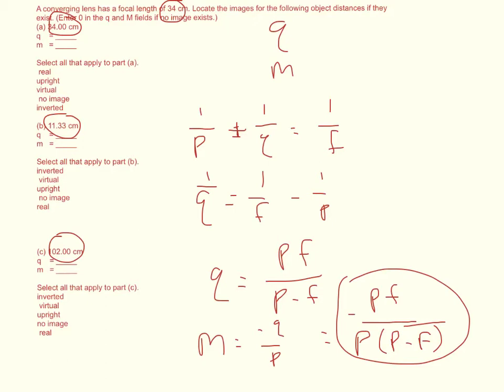But you don't have to do that. You'll notice here that we can cancel out one of these P's. And so the magnification is equal to negative focal length divided by P minus the focal length. And so really simple magnification equation for a thin lens.